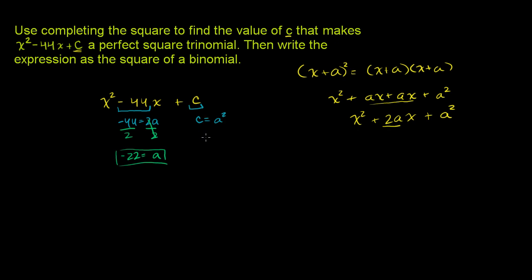So c needs to equal (-22)². And we could figure out what that is. 22 times 22. We could put the negative later. Actually, it's going to be the same thing because the negative times the negative is a positive. 2 times 22 is 44. Put a 0. 2 times 22 is 44. Get a 4, get an 8, get a 4. So it's 484.